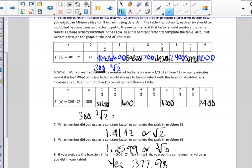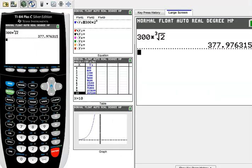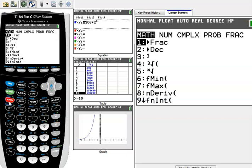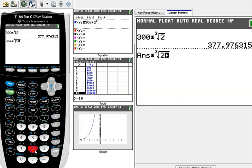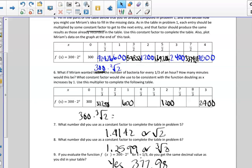you can see that 300 times the cube root of two would yield 377.97 bacteria. So we've added that to our chart, and then after two-thirds of an hour, we would multiply that value by the same constant ratio or multiplier. So again, that would be times the cube root of two, and that would give us 476.22 bacteria. So I'm going to add that to my table and try and squeeze it in here, because I'm running low on space.